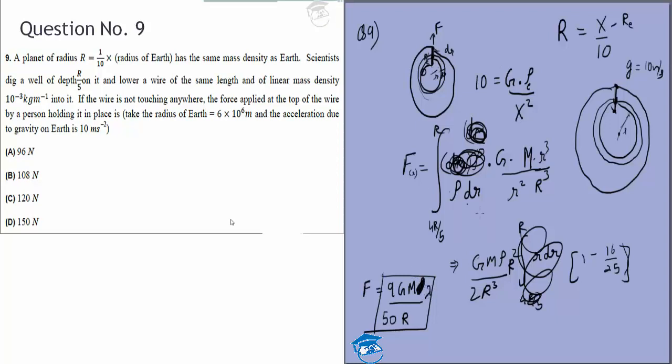I should have used lambda here. I'll use lambda and make this ρ because ρ is generally mass density and lambda is the linear mass density which we should have used.